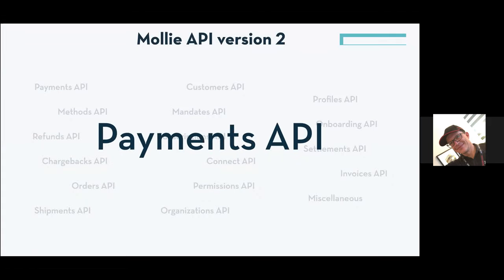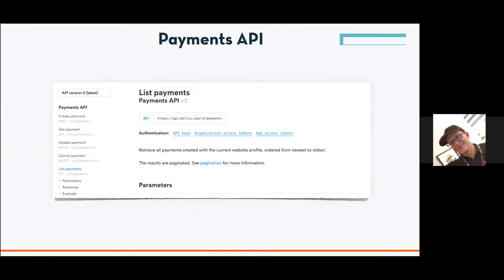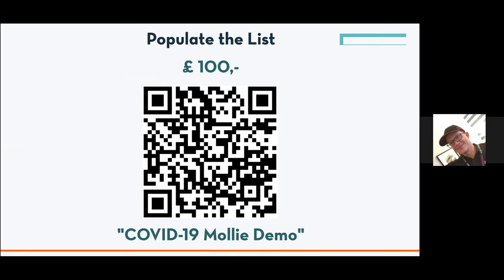I went into the documentation, read through it, and came up with two methods I will use: one is Create Payment and the other is List Payment. We start with List Payment and then do Create Payment — which sounds a little strange, as I found out after my first test. Because when you want to list payments and there are no payments, you can't really demonstrate it. So I put up a QR code so everyone can scan it and wire me 100 bucks — and then we can have some payments to use in the presentation.